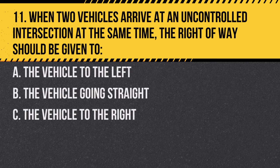Question 11. When two vehicles arrive at an uncontrolled intersection at the same time, the right-of-way should be given to: a. The vehicle to the left. b. The vehicle going straight. c. The vehicle to the right. Answer: c. The vehicle to the right. At uncontrolled intersections, the right-of-way goes to the driver on the right.